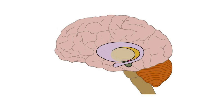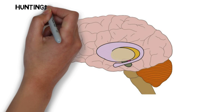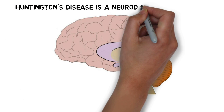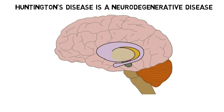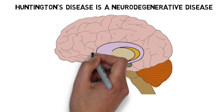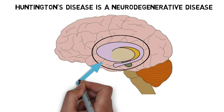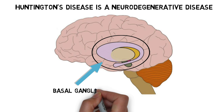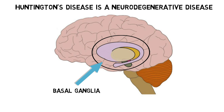These symptoms are associated with neurodegeneration, or the deterioration and death of neurons. A group of structures called the basal ganglia are strongly affected, but other regions of the brain experience neurodegeneration as well.